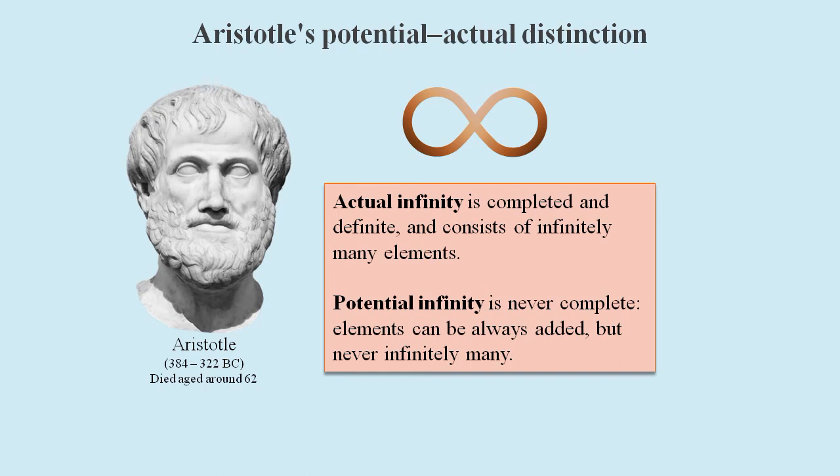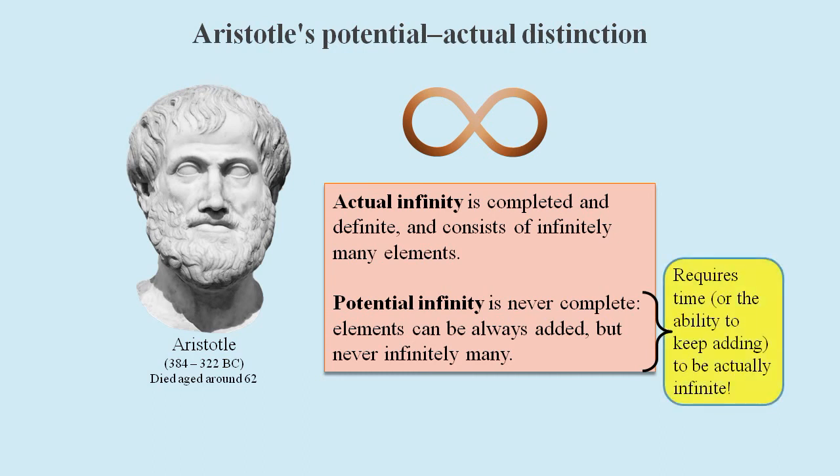This potential infinity was devised in order to avoid the problematic nature of an actual infinity. One criticism of this approach is that in order for a potential infinity to exist we must first assume that the ability to keep adding will persist forever, where the word forever implies an actual infinity. And so this concept of a potential infinity is just a slippery way of disguising an actual infinity.